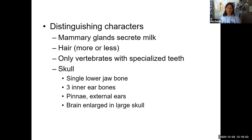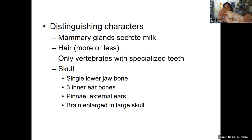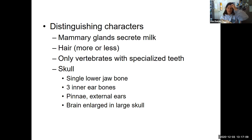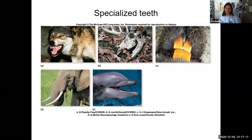Mammals also have an enlarged brain case. Even if this skull doesn't look very big to us, inside there is the brain case where the brain sits. It is much larger than any of the other vertebrates and other species. So again, those are the characteristics of class Mammalia.